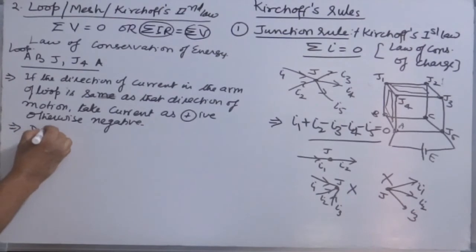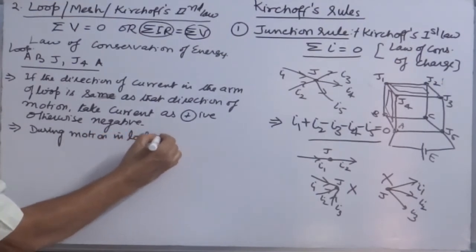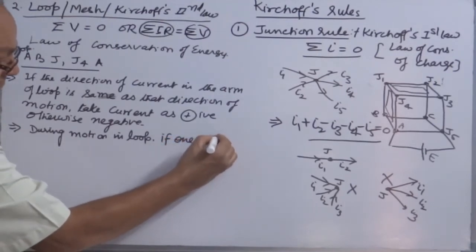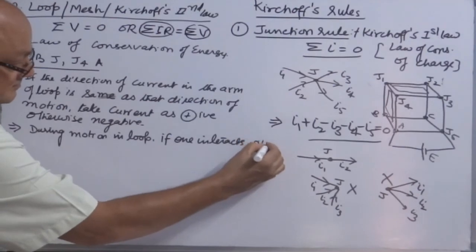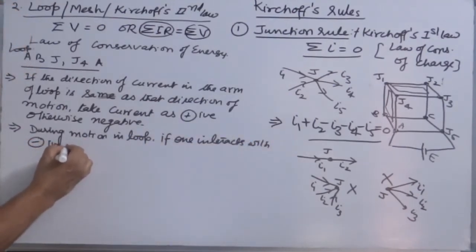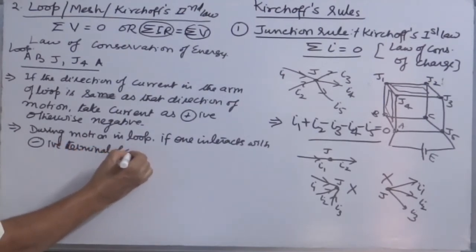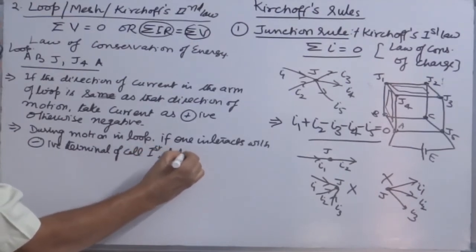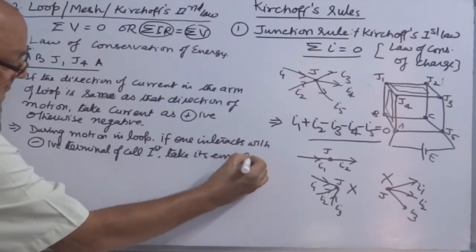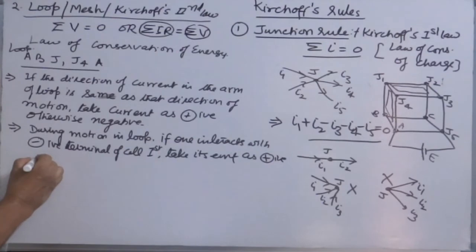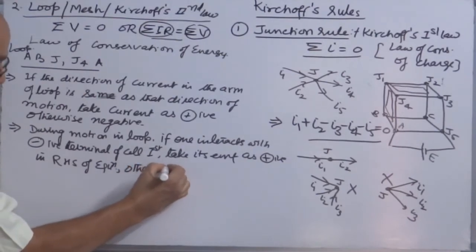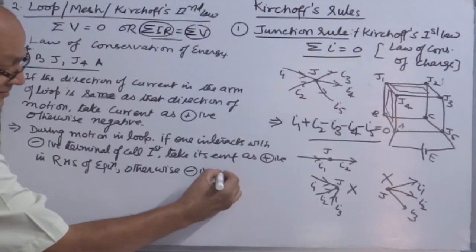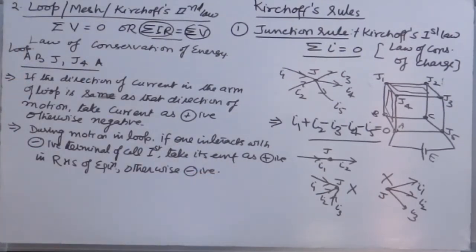Similarly, during motion in a loop, if one interacts with the negative terminal of a cell first, take its EMF as positive in the RHS of equation. Here you have to apply the second equation. Otherwise negative. What do I mean by otherwise negative? When you interact with the positive terminal first, then you will take it as negative.